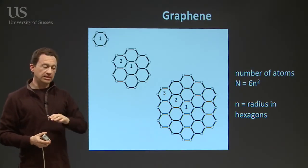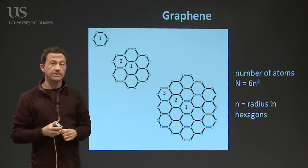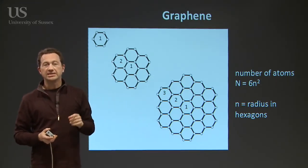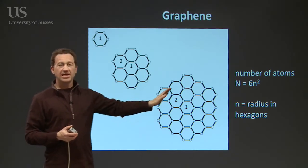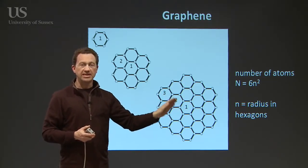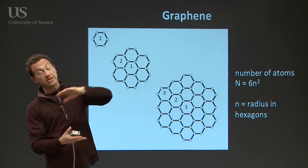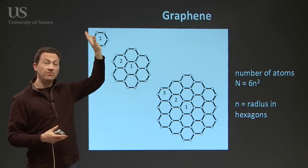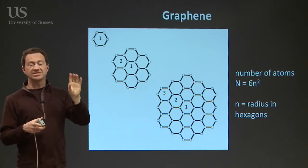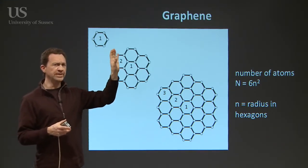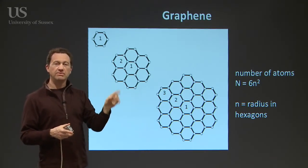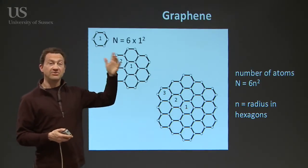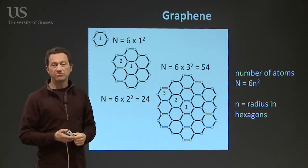Now let's take graphene. This isn't a round structure, so we can't use Euler's law in quite the same way. For flat things, it turns out that if you have a flat sheet of hexagons, the number of atoms in the sheet is given by 6n², where n is the number of layers of rings around the centre — not layers on top of each other. So a single hexagon is 6 times 1², which is 6 atoms of course. When we go to a hexagon surrounded by hexagons, that's n equals two: 6 times 2² is 24, and so on. We can use this to predict how many atoms are in each of the graphene sheets.